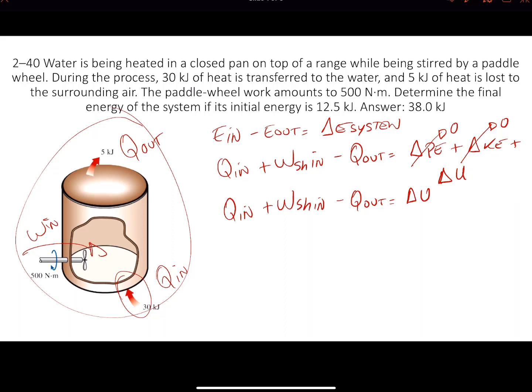Now that you know exactly what you need to use, all you have to do is plug in the values. Q in, I believe, is 30 kilojoules plus the work of the shaft which is 500 newton meters. Those are simple units. You have to convert everything to kilojoules. You cannot work with oranges and apples. I'm not going to tell you how to convert that. 0.5 kilojoules equals 500 newton meters. And then the Q coming out equals 5 kilojoules. This equals delta U, which is U2 minus U1.